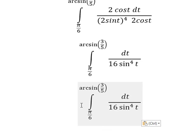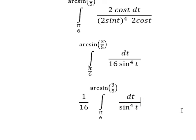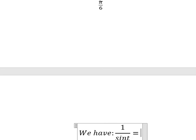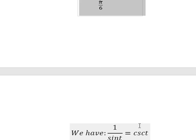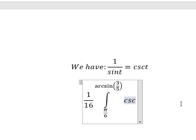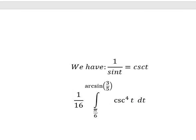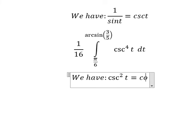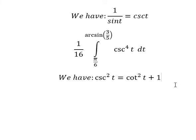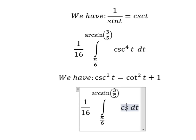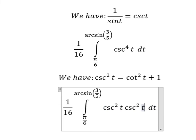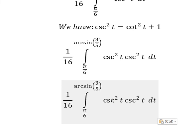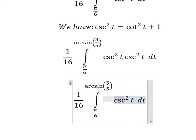I will put 16 outside. Now we have the formula: 1 over sin(t) equals cosecant of t. We need to transform this into cosecant⁴(t). Next, we have the second formula: csc²(t) equals cot²(t) plus 1. So we can put this as csc²(t) multiplied by csc²(t), and we change using this identity.